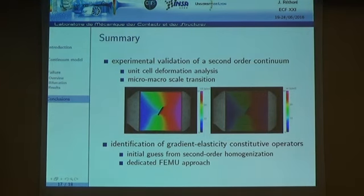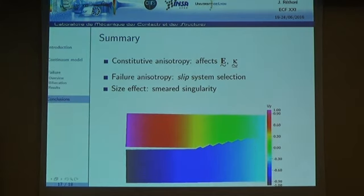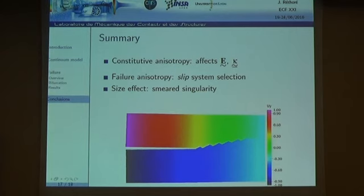We developed an experimental setup to validate the continuum model at the microscale by analyzing unit cell deformation and linking the microscopic and macroscopic scales. We also developed a strategy to identify the gradient elasticity constitutive operator. The proposed model accounts for both the directionality effect and the size effect through the gradient term in the gradient elasticity energy.